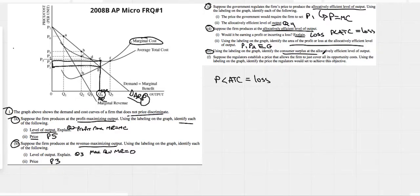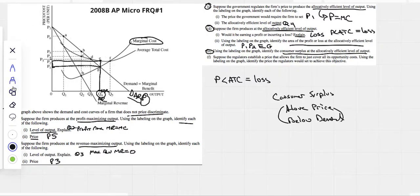Using the labeling on the graph, identify the consumer surplus at the efficient level of output. Now remember, consumer surplus is everything above the price but below the demand curve. So obviously it's just a triangle. Let me get rid of this price here because we don't need it. We do need to show where the price is, that's obviously at P1. And we could show this whole triangle here, everything above the price, everything below demand would be consumer surplus. So using the labeling on the graph, could we say P1 P7 G? I think we can say that.